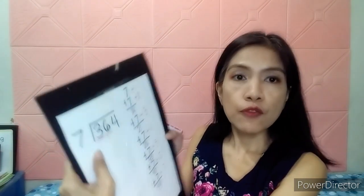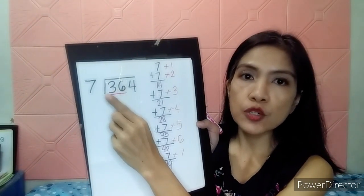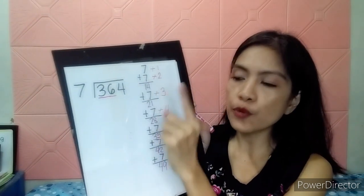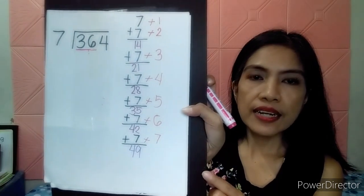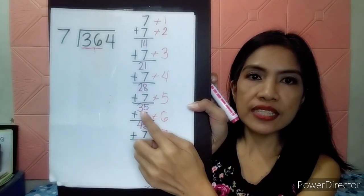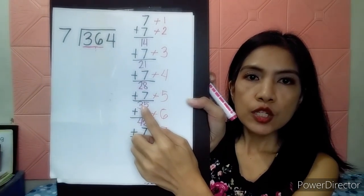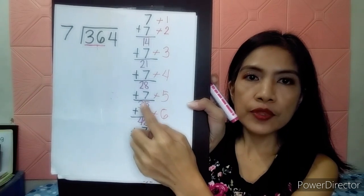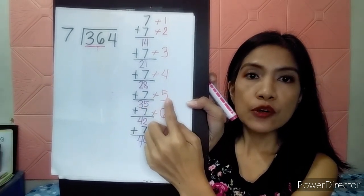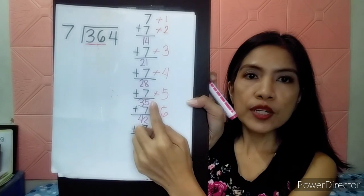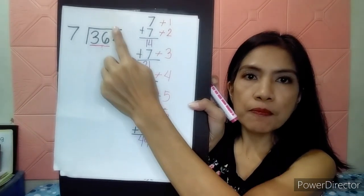And then, after that, I asked her, can we divide 3 by 7? And she said, no, Teacher, we can't. So, what are we going to do? Forward another number, so it should be 36. Now, let's look for 36. Where is 36 near? She said 36 is near 35. So, what number is 35? It's 5. So, therefore, we're going to write 5 on top here.